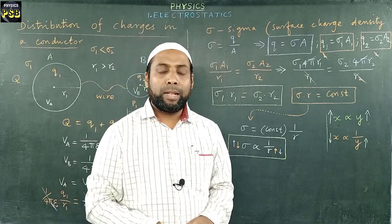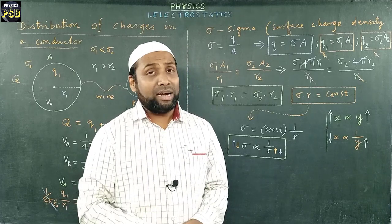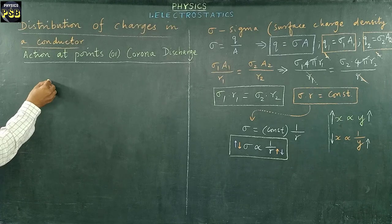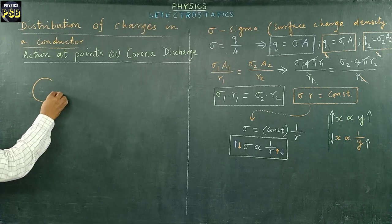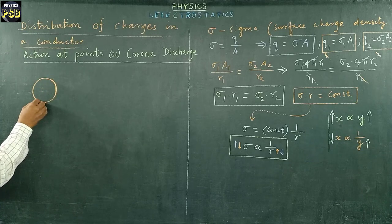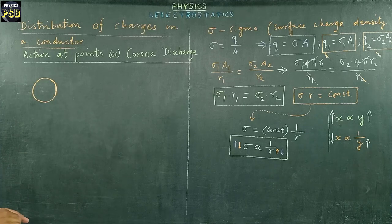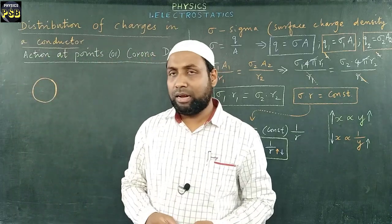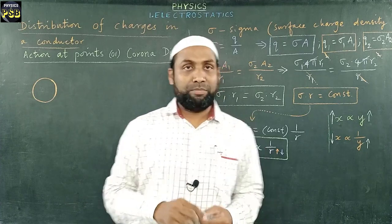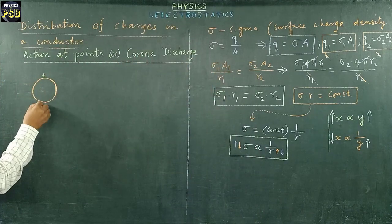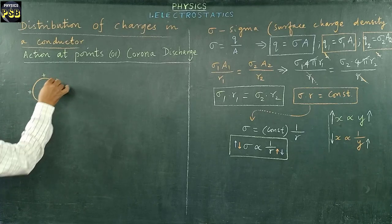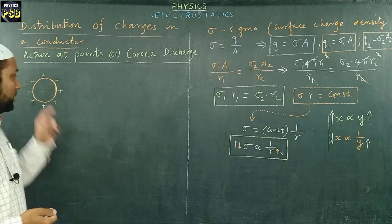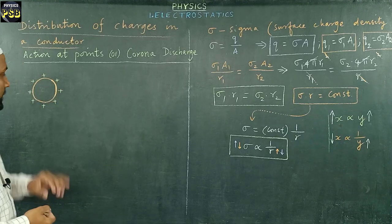Now we will discuss action at points, or corona discharge. Consider a spherical conductor to which a positive charge is supplied. When any charge is supplied to a conductor having a regular shape, the charges get distributed uniformly.